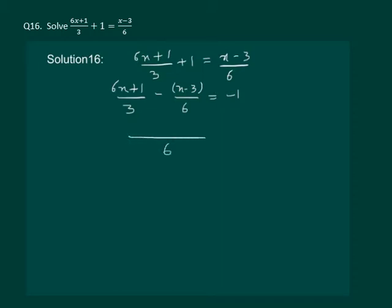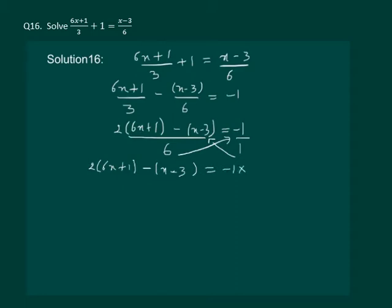Now let us take the LCM. We get 6 as the LCM and 2 times 6x plus 1 minus x minus 3 equal to minus 1. Now minus 1 can be written as minus 1 by 1. So let us cross multiply and in the next step we get 2 times 6x plus 1 minus x minus 3 equal to minus 1 into 6.